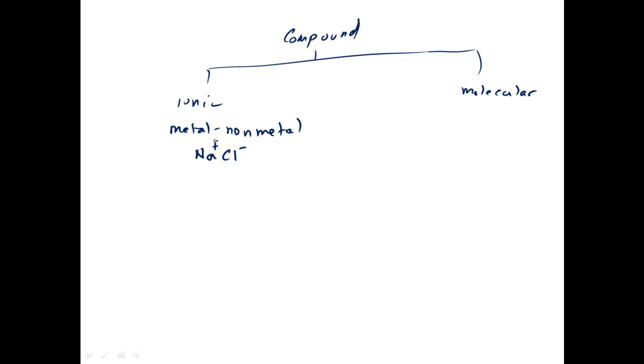Molecular compounds are nonmetals bonded with other nonmetals. Let's just say nonmetal bonded with another nonmetal, such as CO2.